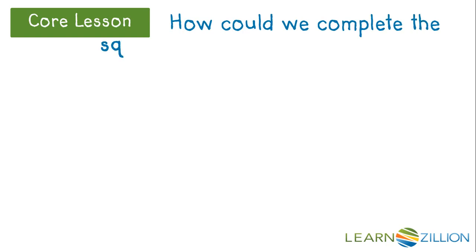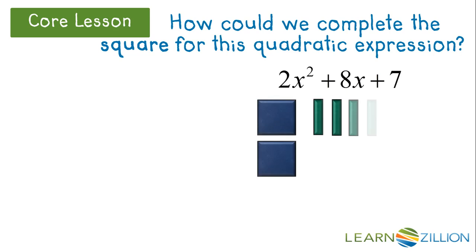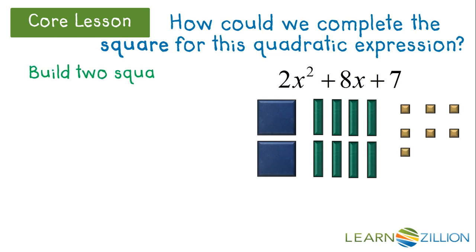How could we complete the square for this quadratic expression? 2x squared plus 8x plus 7. Well, we're going to build 2 squares.